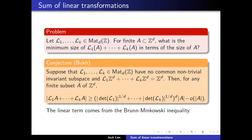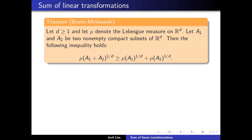Where did this linear term come from? It comes from the Brunn-Minkowski inequality. The Brunn-Minkowski inequality says that if you have two non-empty compact subsets in R^d, then the volume of A_1 plus A_2 can be lower bounded by this inequality. The equality case is when A_1 and A_2 are homothetic.